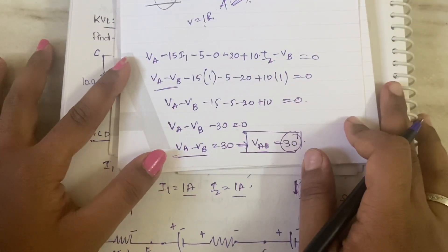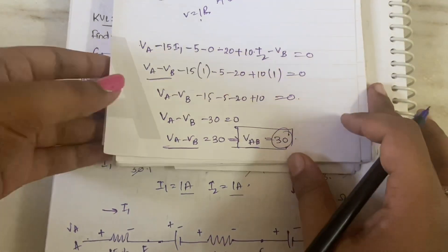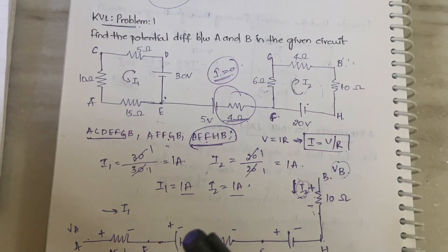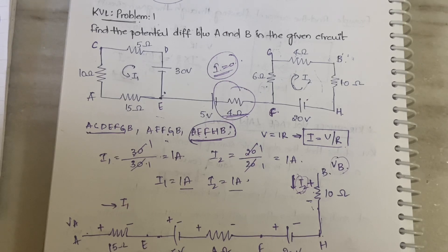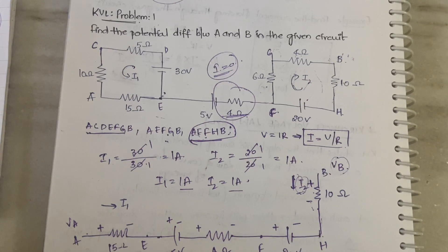I hope this video is clear. To summarize the steps: name all the nodes, identify the path, calculate the currents, redraw the circuit, assign signs, and write and solve the KVL equation. Thanks for watching. If you have any doubts, let me know in the comment section or through Instagram or Gmail. Stay tuned for more videos.